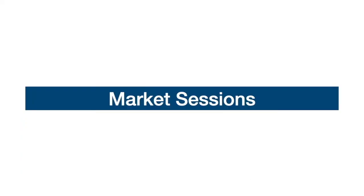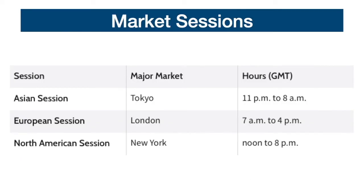The forex market is divided into three main sessions: the Asian session, the European session, and the American session. Sessions are essential to understand in order to select the hours in which you want to invest, depending on where you live, what type of trader you decide to be, what type of volatility you prefer, and which currency pairs you have chosen to focus on. Each pair moves differently during each of the three sessions, which is why there are different techniques for the different moments of the market.